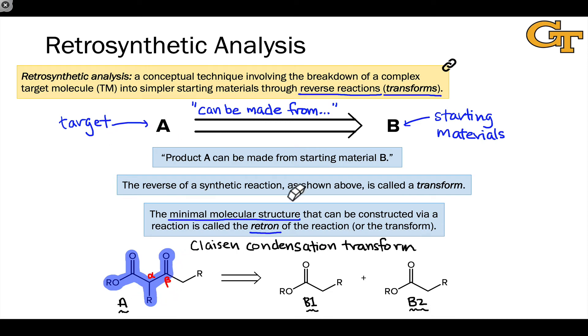And so this structure that I've highlighted in blue, really just the beta-keto ester is the retron of the Claisen condensation transform. It is the functionality that is created by running this reaction in the forward direction. That's what we call the retron.